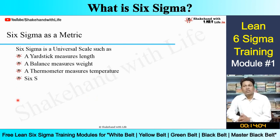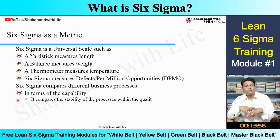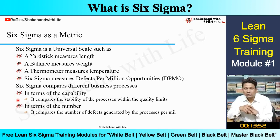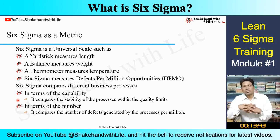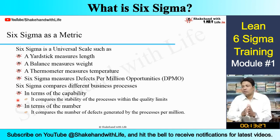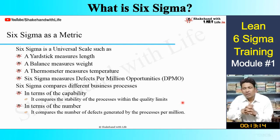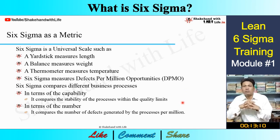Six Sigma as a metric — Six Sigma is a universal scale, just as a yardstick measures length, a balance measures weight, and a thermometer measures temperature. In the same way, Six Sigma measures defects per million opportunities, or DPMO. Six Sigma also compares different business processes — same type or different types — on the basis of their capability. It compares the stability of processes within quality limits and the number of defects generated per million.